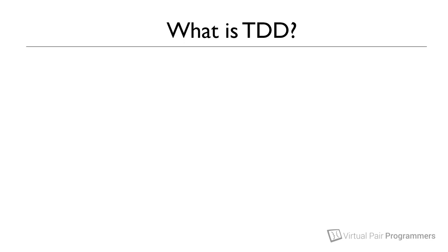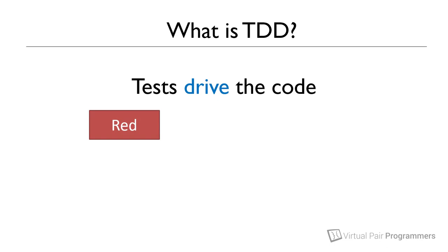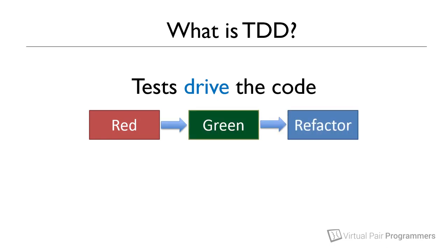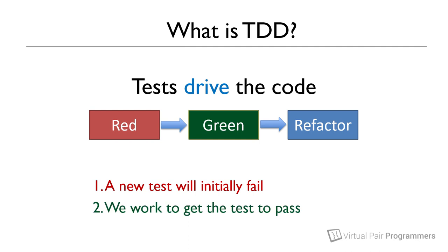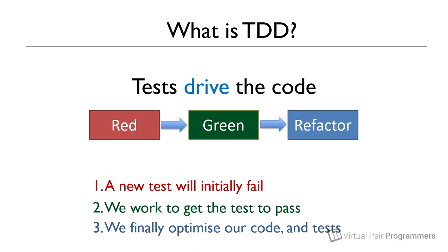Test-driven development means that we use tests to drive the writing of our code. In general, there's a workflow which we use, which is normally described as red-green-refactor. Red means that we'll be writing tests of business logic that we expect initially to fail — they'll fail because we haven't yet written any code to make the test pass. Green means that we'll write or correct code so that our tests pass. And then refactor means that once we have our tests passing, we'll be able to refactor our code and our tests to make them more efficient. Each of these three steps have their own set of rules or mini-steps to follow.